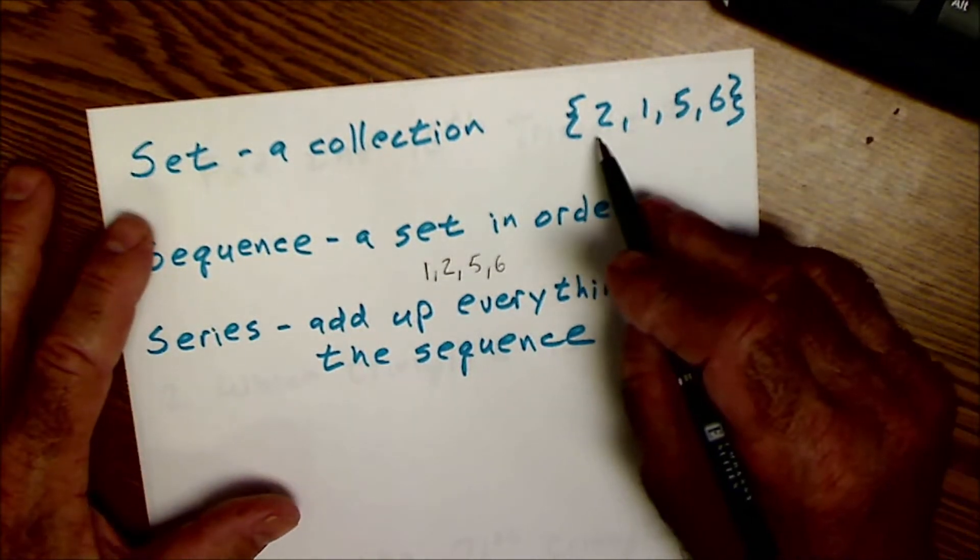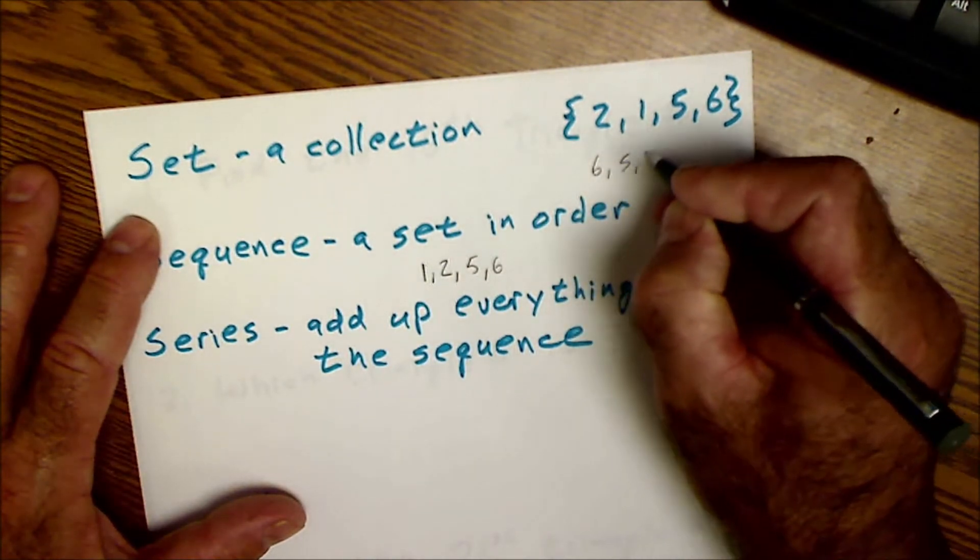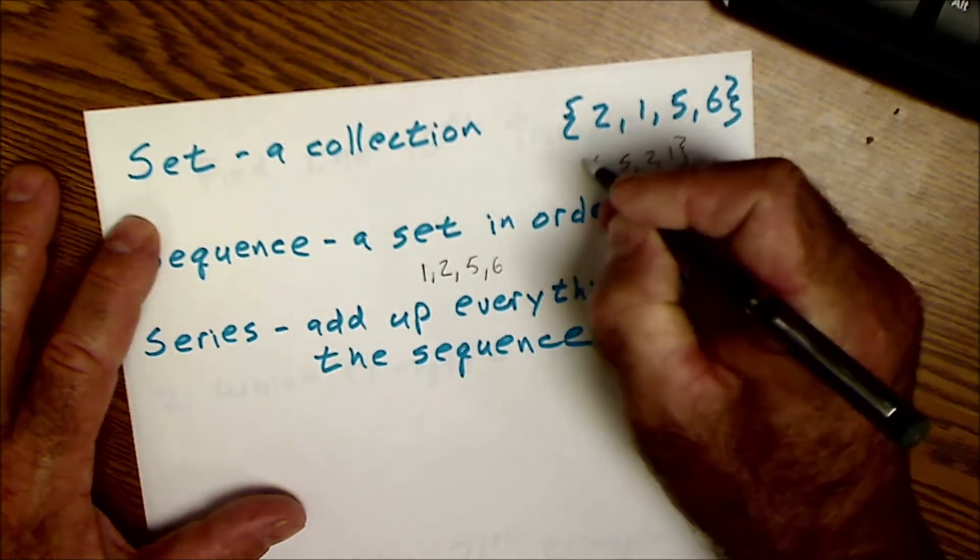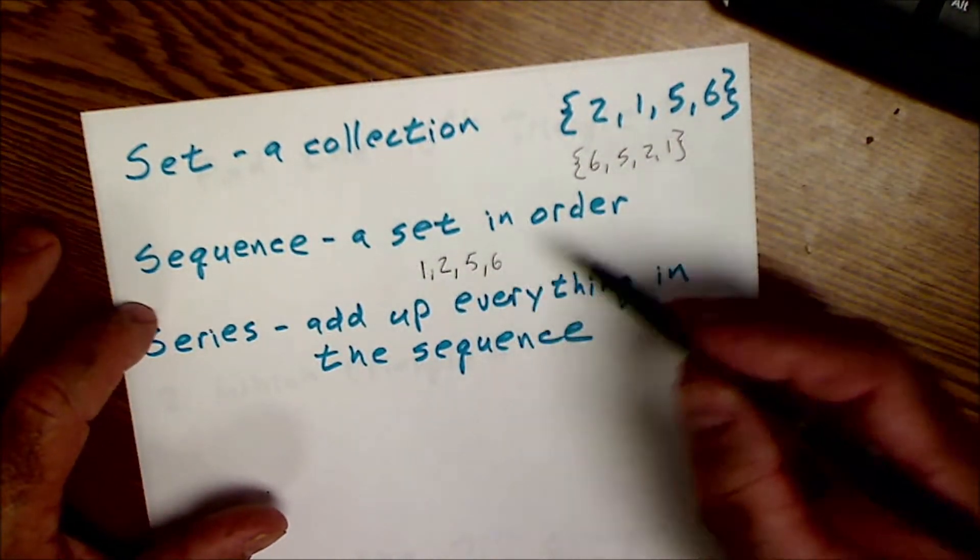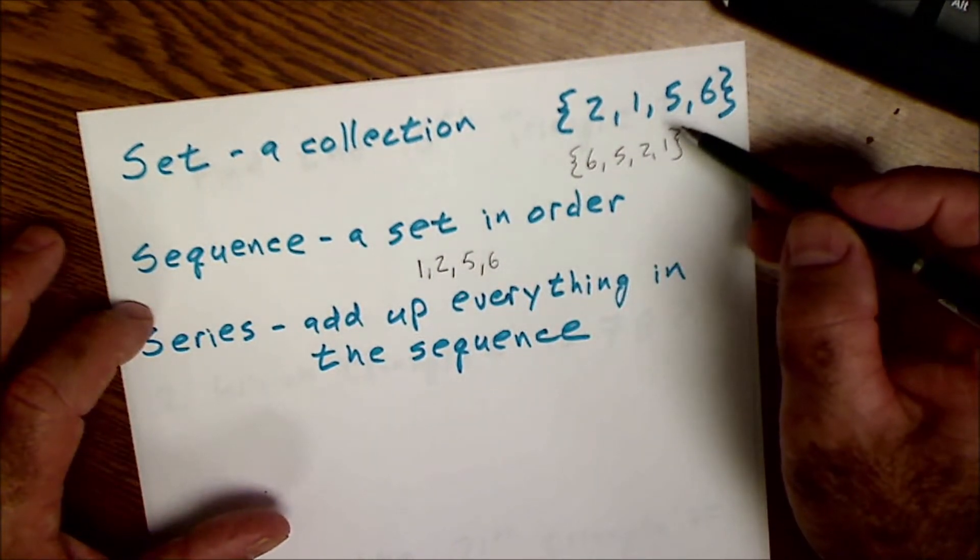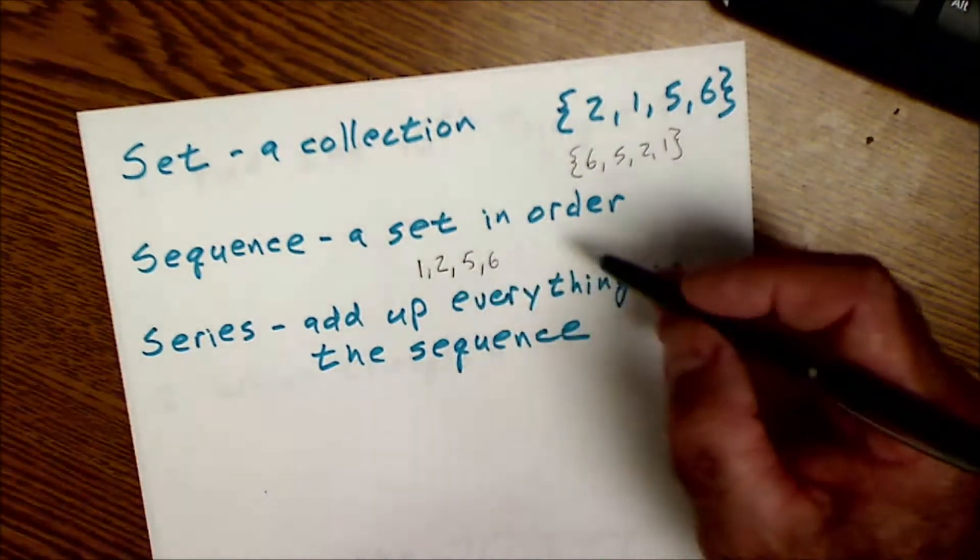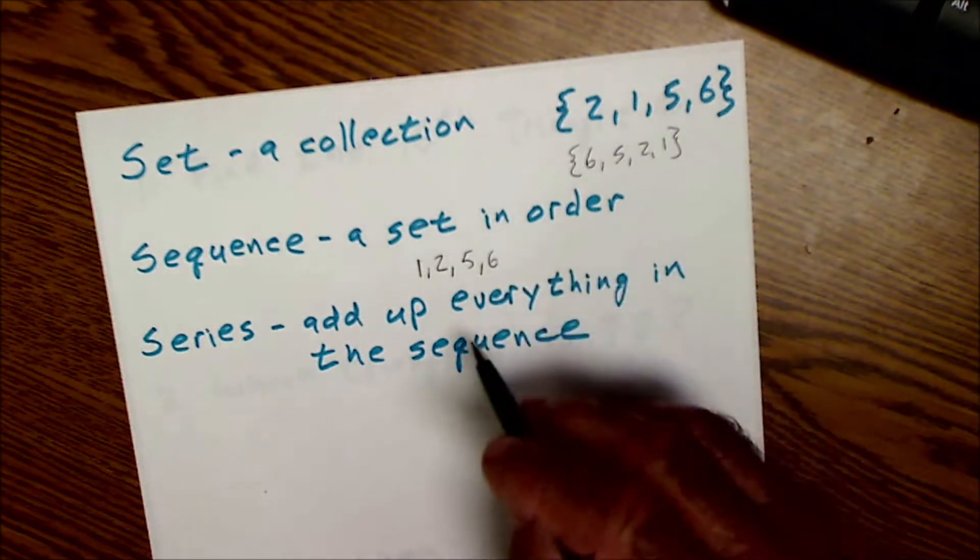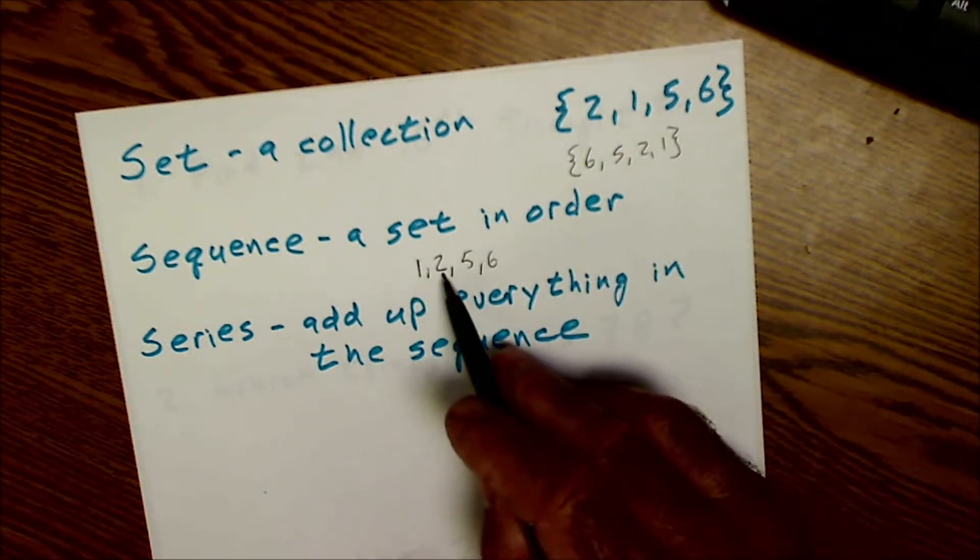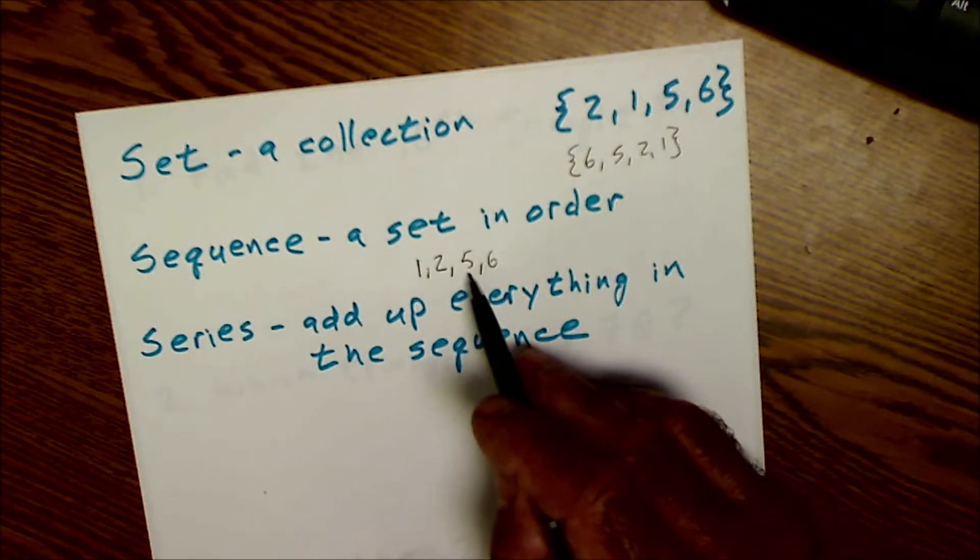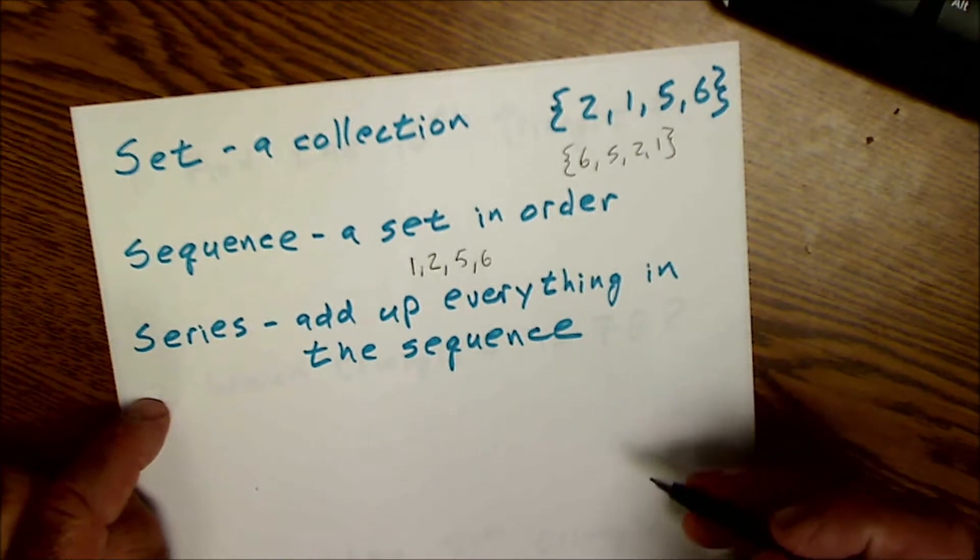There's really no difference between this set 2, 1, 5, 6 or this set here 6, 5, 2, 1. They're the same set of numbers but they are in different order. So the sequence puts the set in order and then the series adds up every value inside the sequence. So if I want to add up the sequence I would take all the values in there and add them: 1 plus 2 is 3, 3 plus 5 is 8, 8 plus 6 is 14. So that's what a series is.